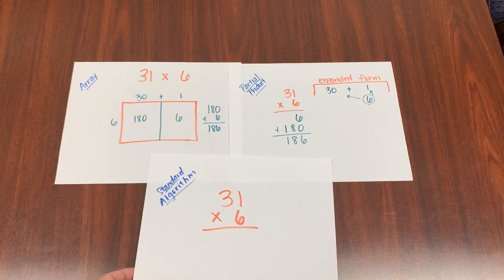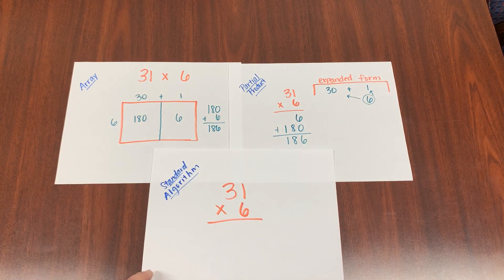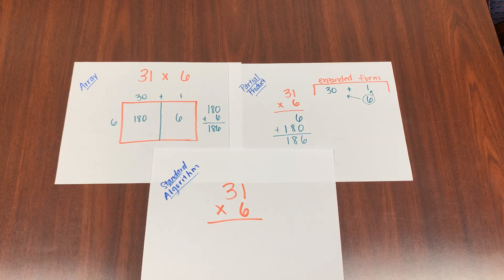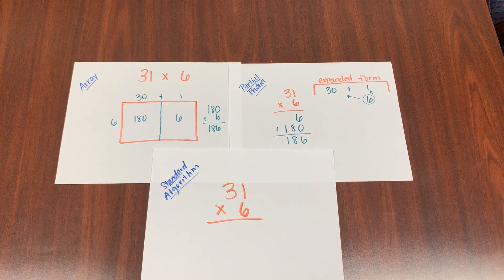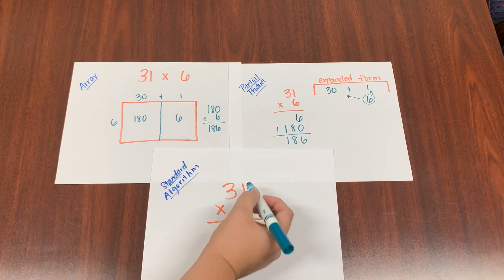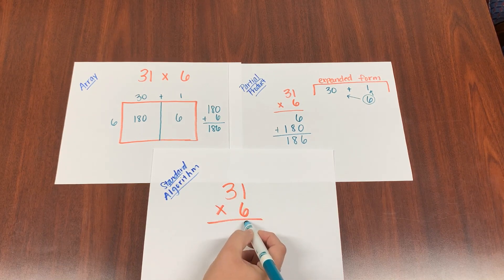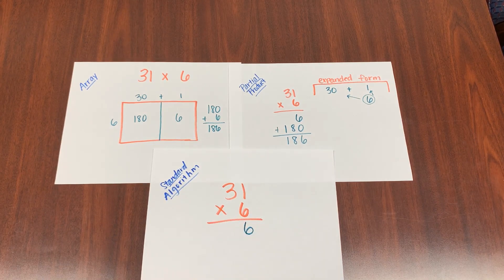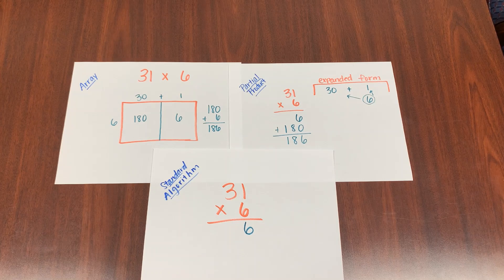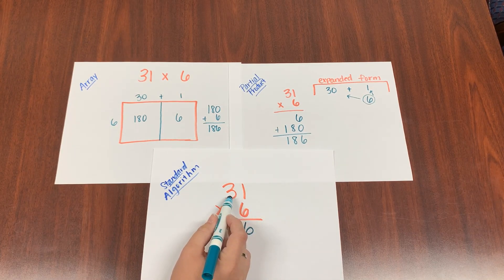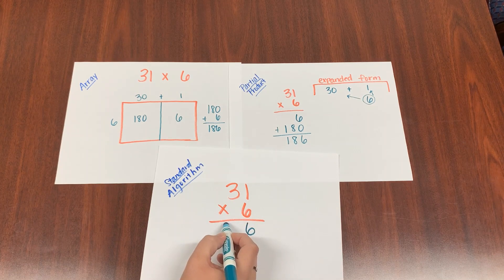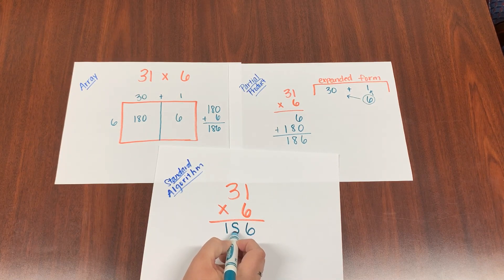So how does this relate to the standard algorithm? Essentially it's the same thing. We're still multiplying by our place values. We're just going to do it in a shorter version. We're going to start by multiplying our ones. 6 times 1 is 6. Now we're going to take our 6 and multiply it by the tens place. 6 times the 3, which is 18. We're just going to write it right beside it.